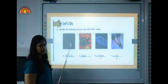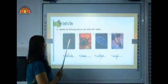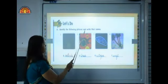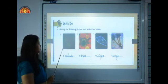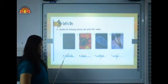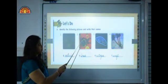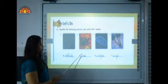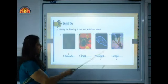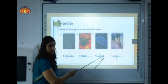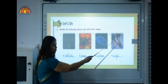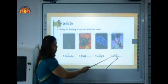Now let us come to the last exercise of this chapter. Identify the following pictures and write their names. The picture shown here is representing bacteria. So you will write bacteria over here. Then this is the picture of virus. So you will write virus over here. This is the picture of protozoa. So we will write protozoa over here. And this is the picture of fungi. So we will write fungi over here.